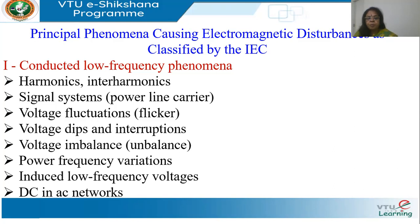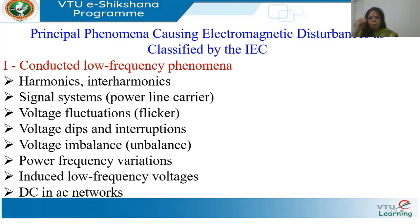Then we have signal systems, where communication signals are sent for coding or messaging through power lines — these are called power line carriers (PLCC). Next, we have voltage fluctuations, also called flicker: a rapid change in voltage around the nominal value. It won't be a huge increase or decrease, just a rapid variation around nominal. This is typically due to welding equipment, which causes flicker that is perceptible to human vision.